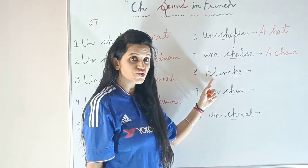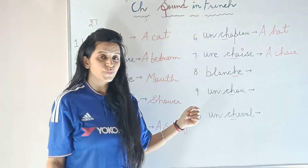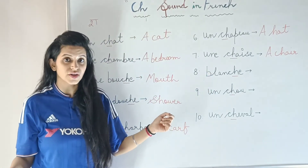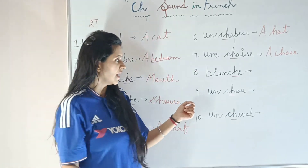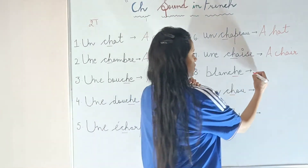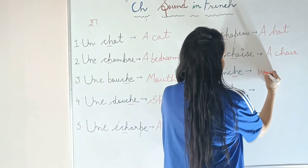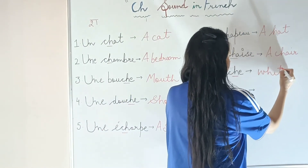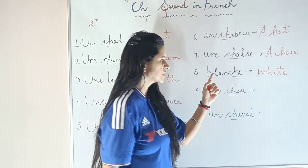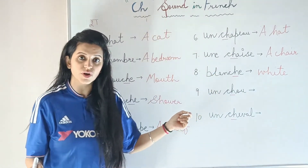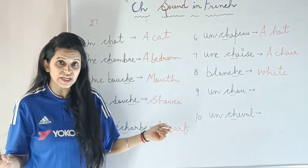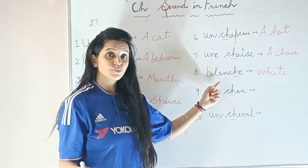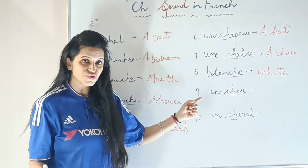The next word: Blanche. Blanche. C'est une couleur — it is a color. White color. We also have masculine and feminine forms, so this is the feminine version — blanche. Blanche.